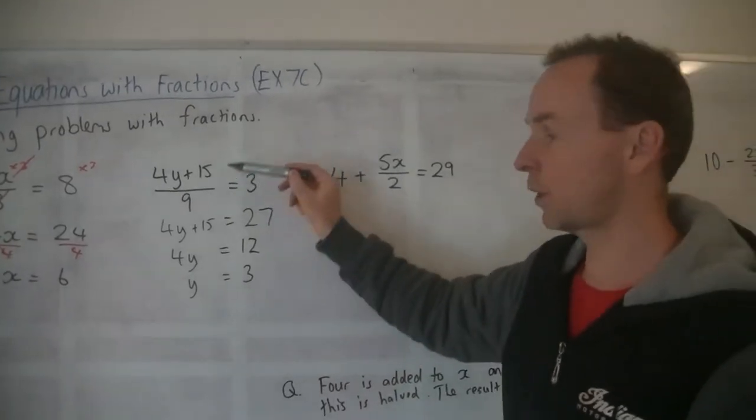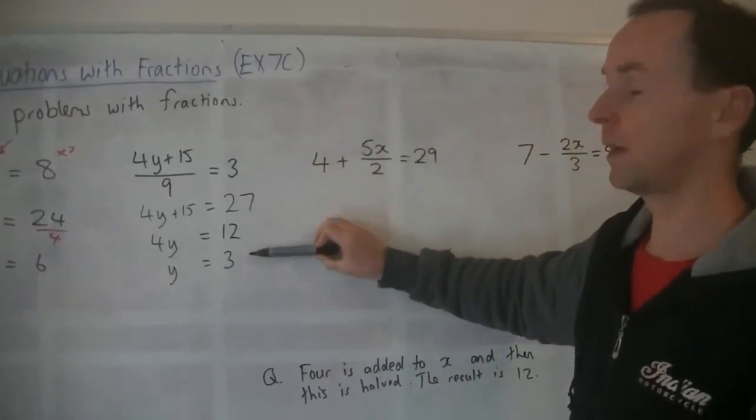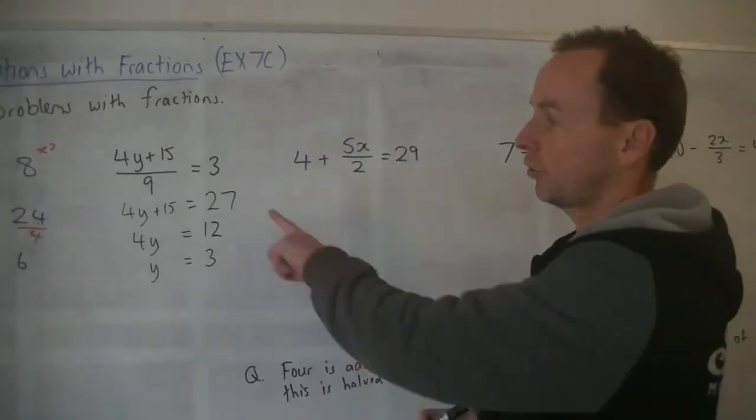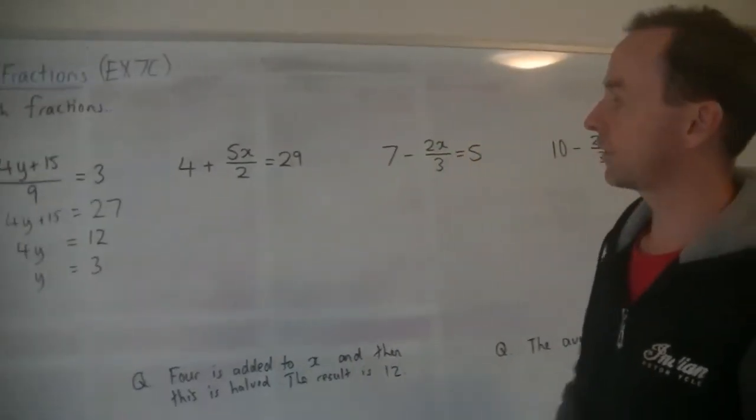So you write y equals 12 divided by 4 is 3. So this time I didn't show my workings out each time, but that is fine. You have to show each step. You'll get full marks for that. So you don't need to do times 9 times 9. Alright, let's go to the next one.